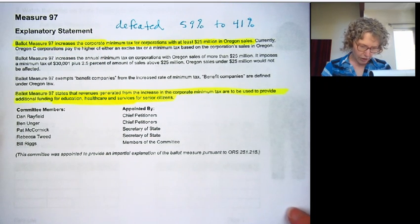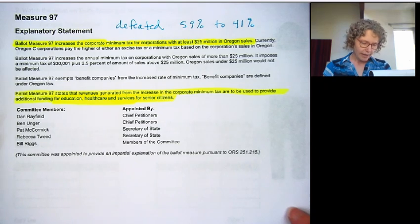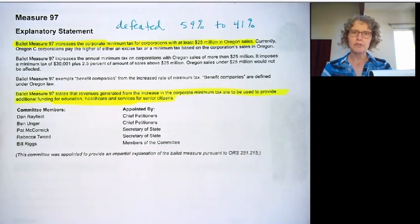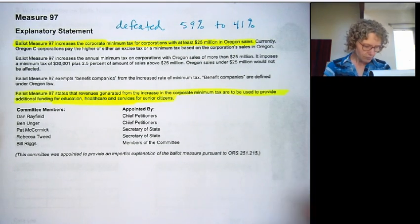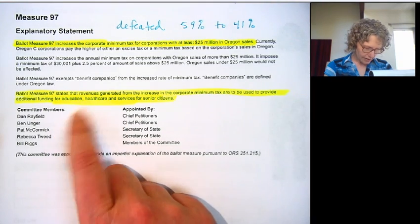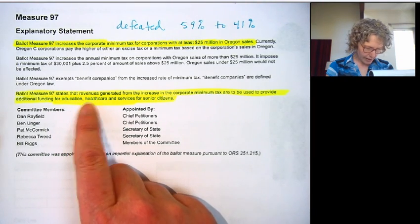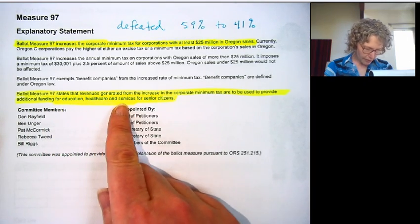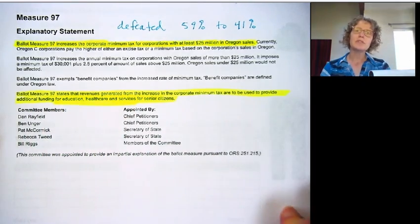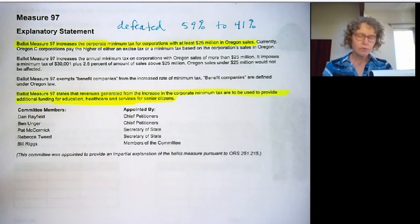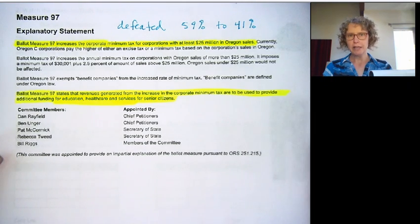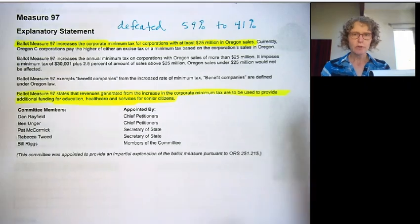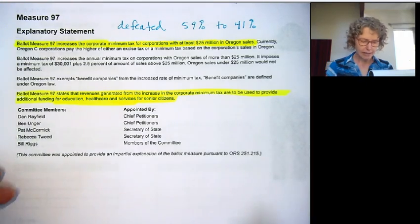Ballot Measure 97 was to increase the corporate minimum tax for corporations with at least $25 million in Oregon sales. It was defeated 59% to 41%. This is just the explanation of it.